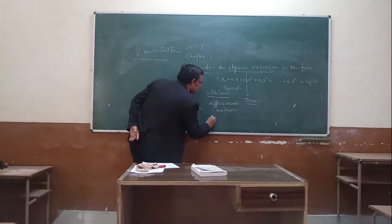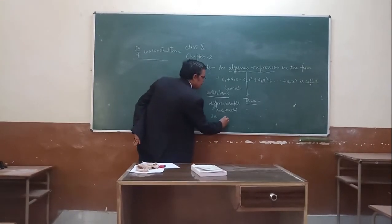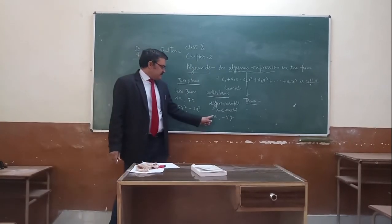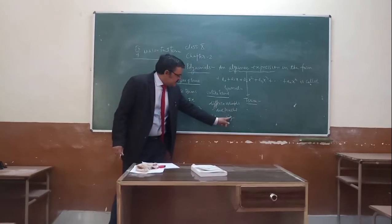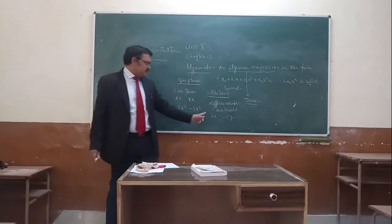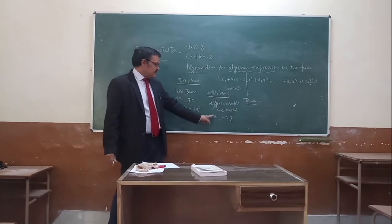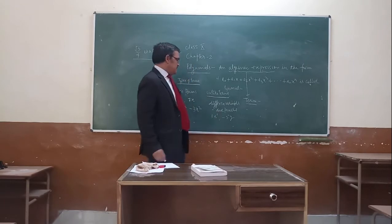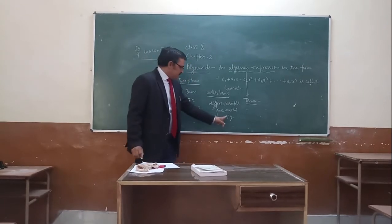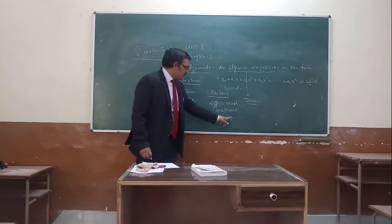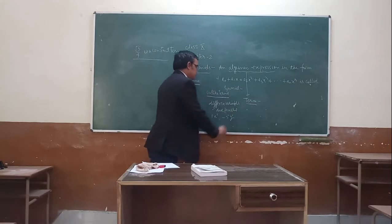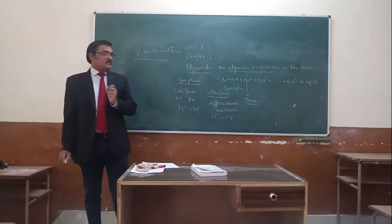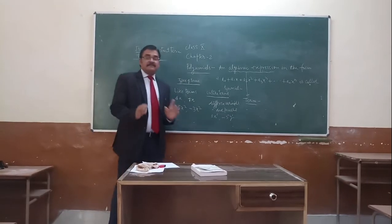For example, 3x minus 5y. Here variable is x and here variable is y. These are two terms. Variable is x, power is 1 here; sign is minus, real value is 5, variable is y and power is 1. So these are terms, but these are unlike terms because the variables are different.